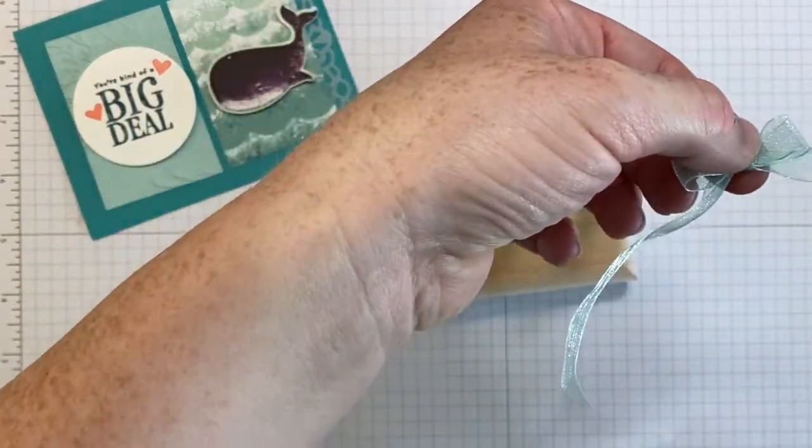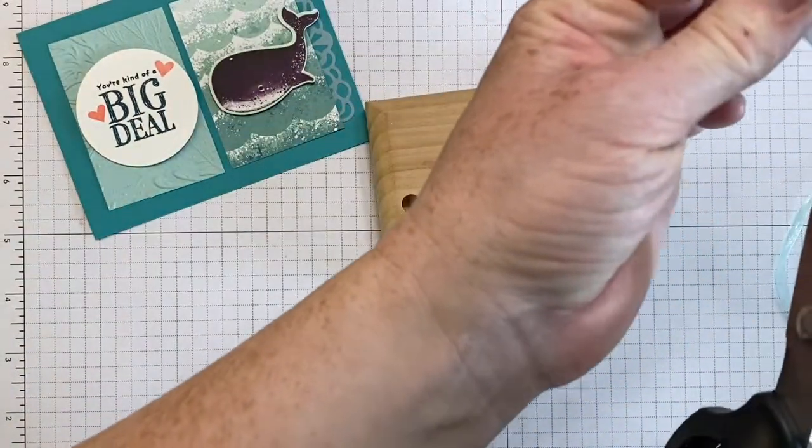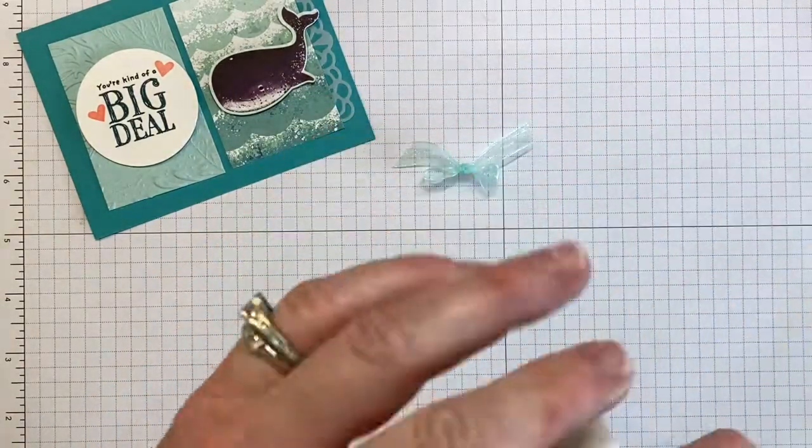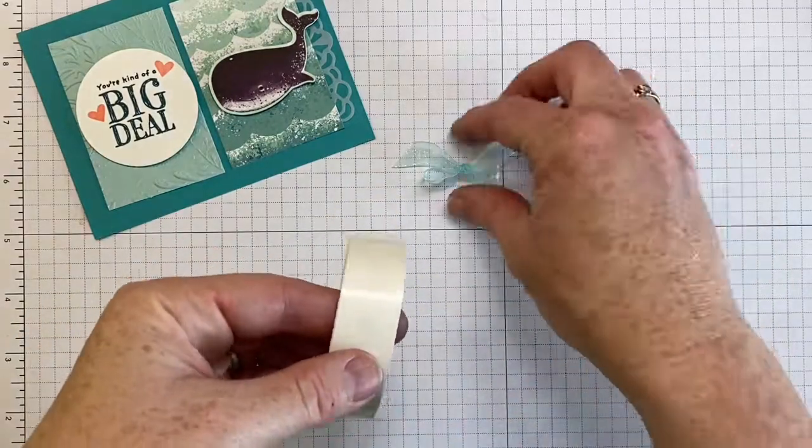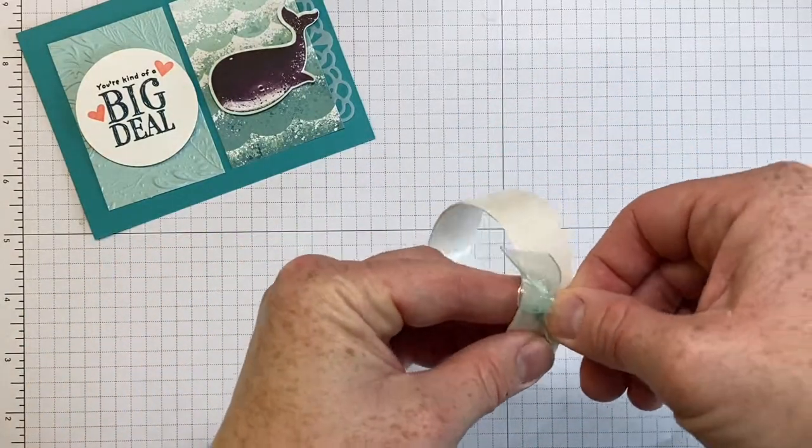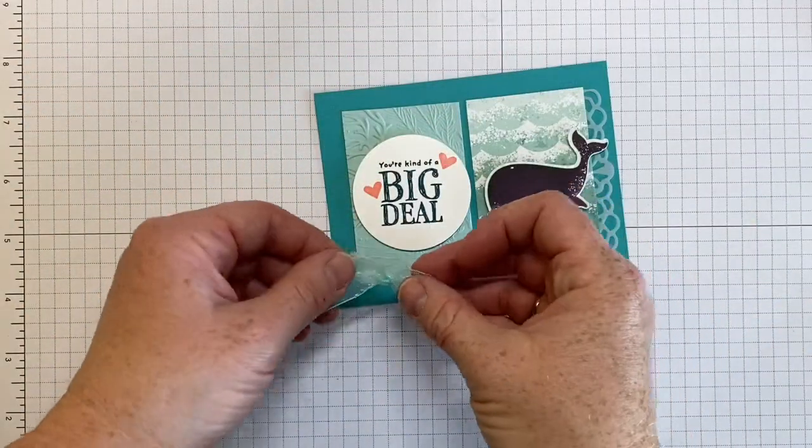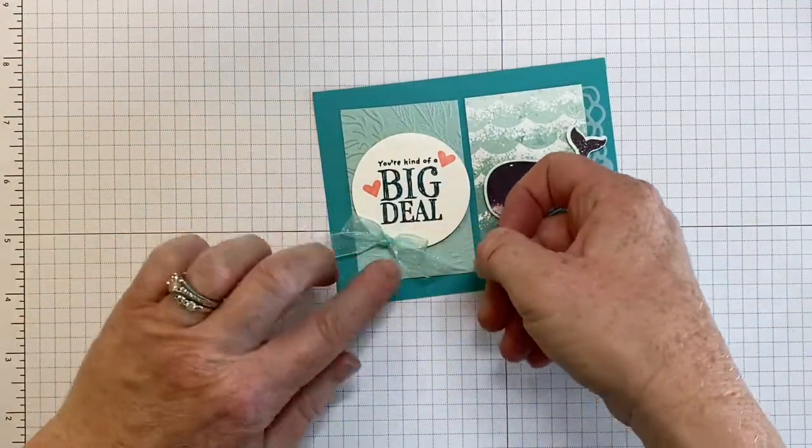You can go ahead and cut off the excess ribbon and then use a glue dot to be able to hold it in place. So we're just going to stick it at the bottom of our greeting here.